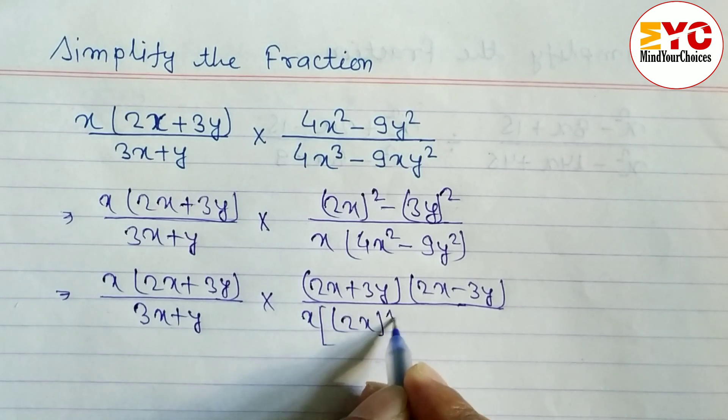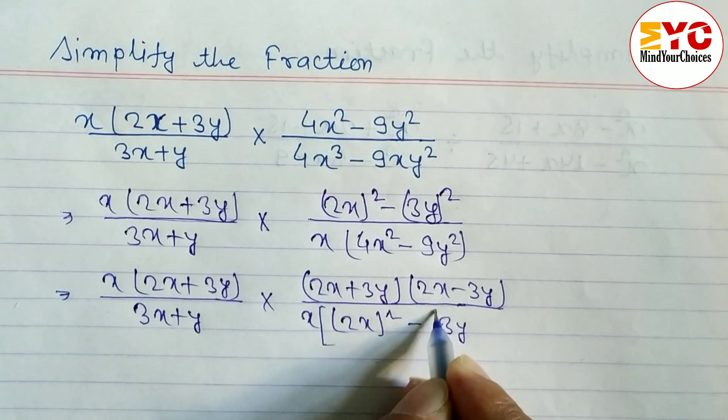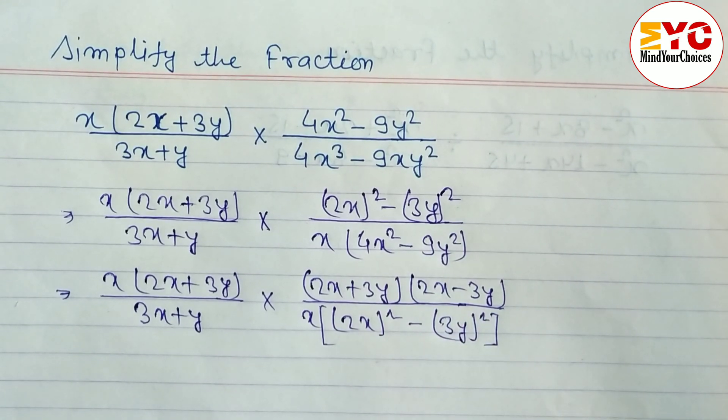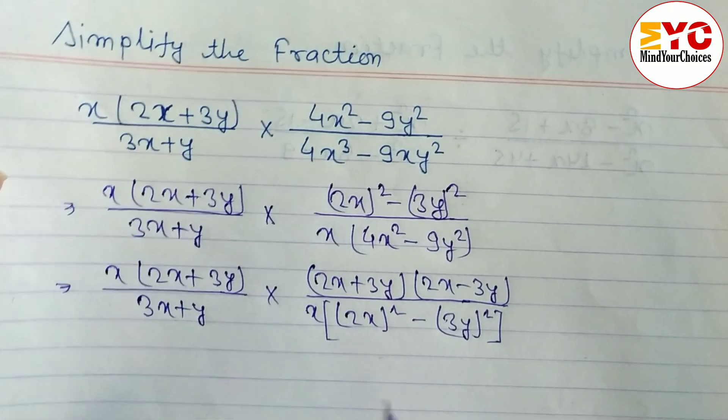So we can write here 2x whole squared minus 3y whole squared. And after this, hope question is correct because this two we can cancel also, but leave it. Let's do one or two step more.